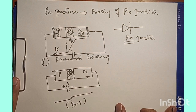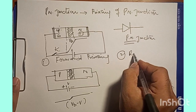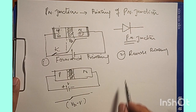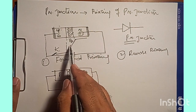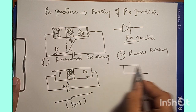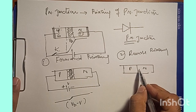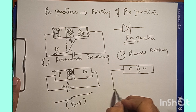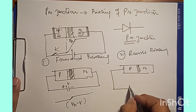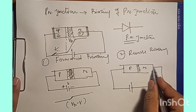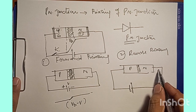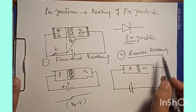Now we talk about reverse biasing. In case of reverse biasing, we reverse the polarity of the battery. By reversing the polarity, we have P, N, and a depletion layer. We give negative to the P side and positive to the N side. When we give the negative side of the battery to the P side and the positive side to the N side, this is called reverse biasing.